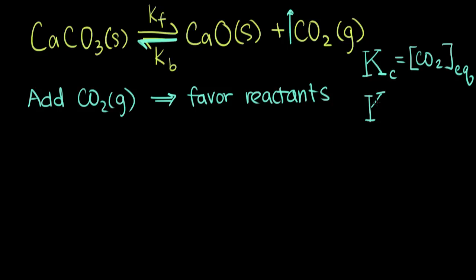You can also write it in terms of partial pressures. So there's our capital K with a P subscript — Kp — which means that instead of concentrations, we write everything for gases in terms of partial pressures. So we have the partial pressure of CO₂, and again, that's it, because everything else is a solid and we don't include solids in our equilibrium expression.